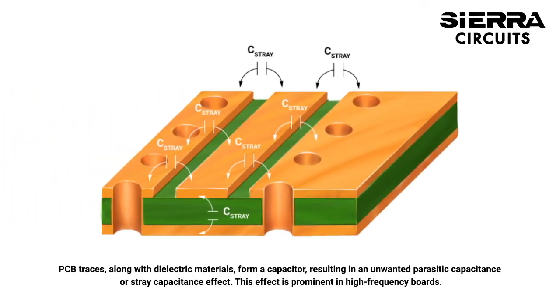PCB traces along with dielectric materials form a capacitor, resulting in an unwanted parasitic capacitance or stray capacitance effect. This effect is prominent in high-frequency boards.